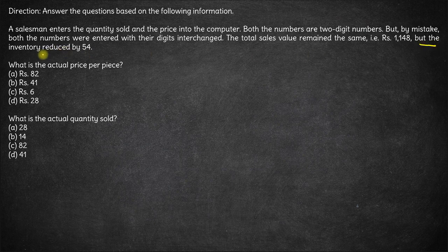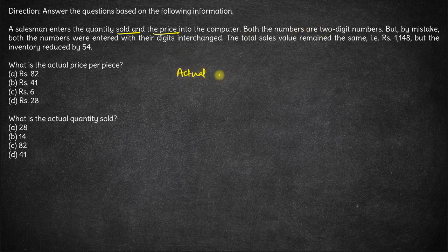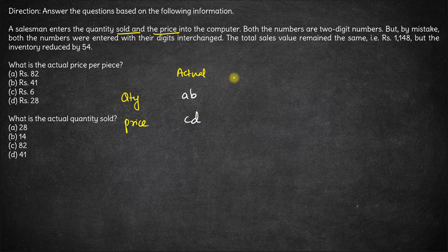This is important: the inventory reduced by 54, and we are entering sales quantity and sales price. Both are two-digit numbers. So let's say the actual values are AB and CD, and the entered quantities will be BA and DC — reversed, right? They are entered with their digits interchanged.